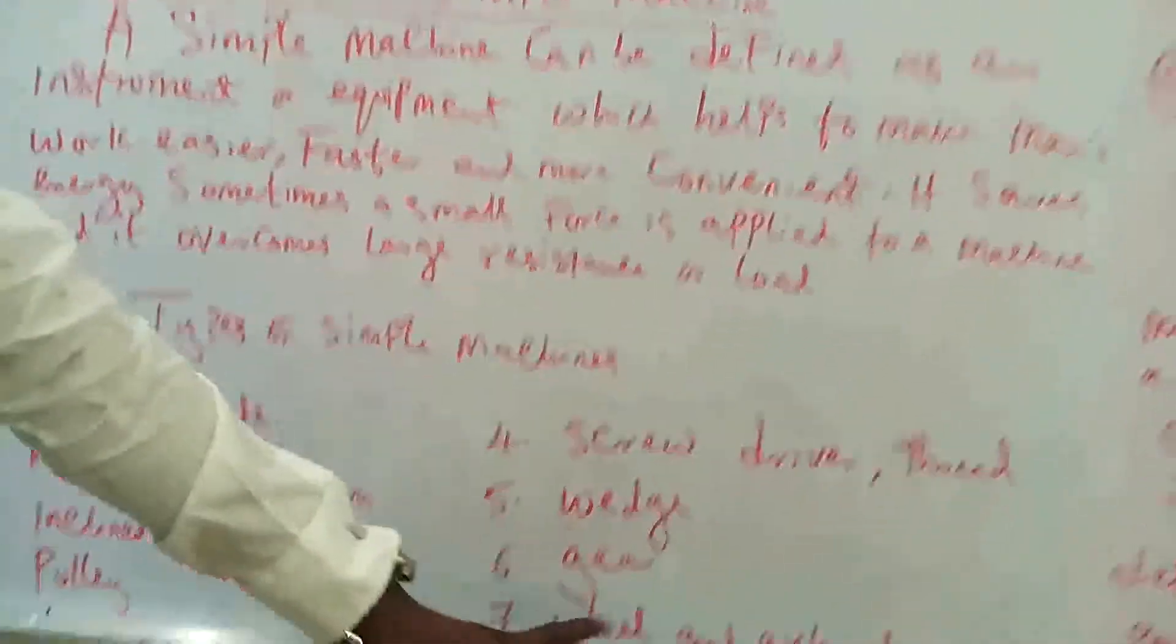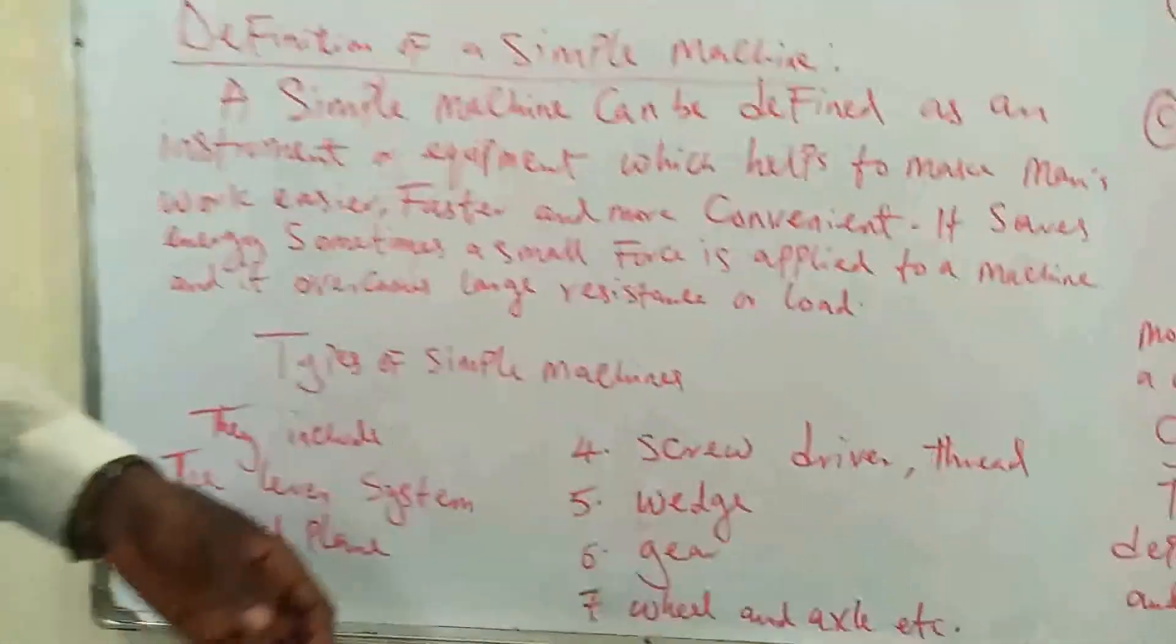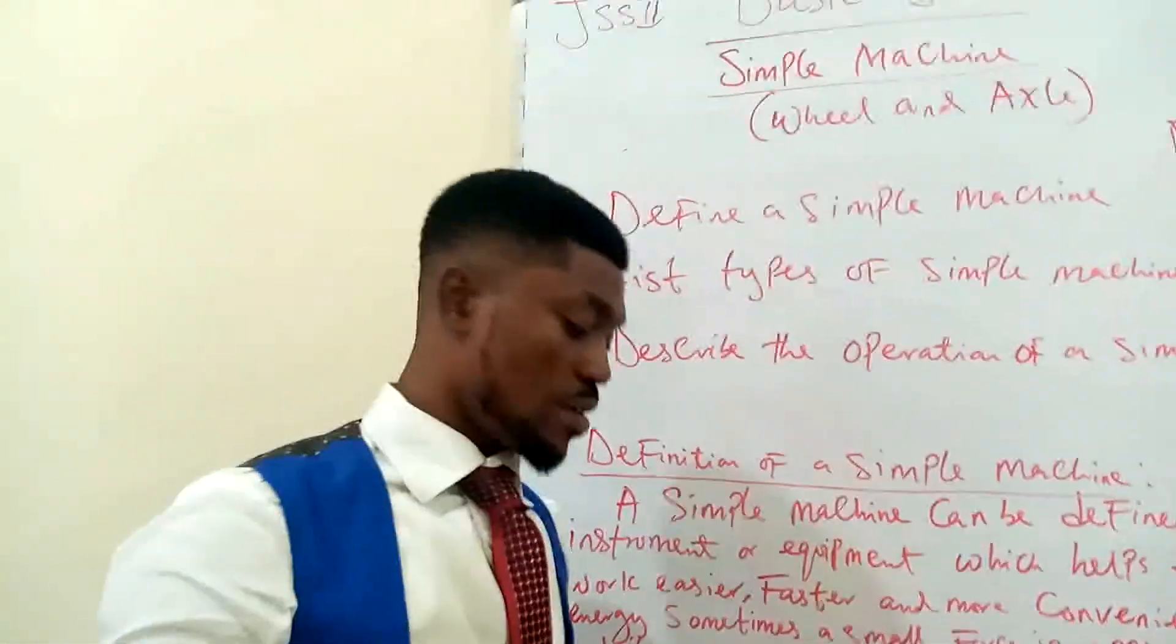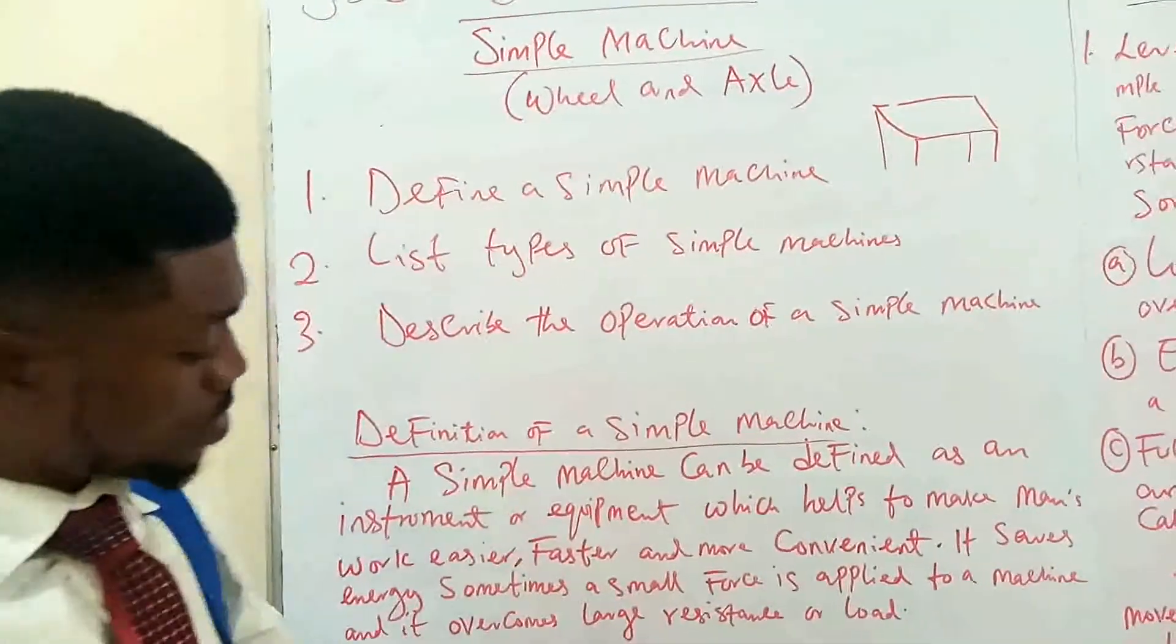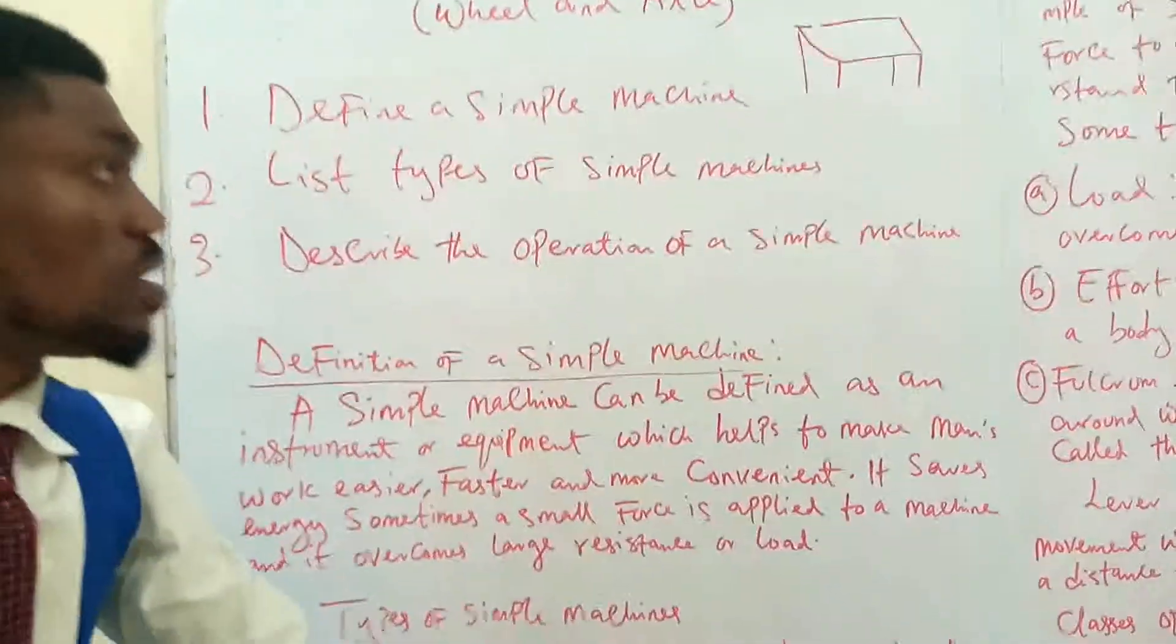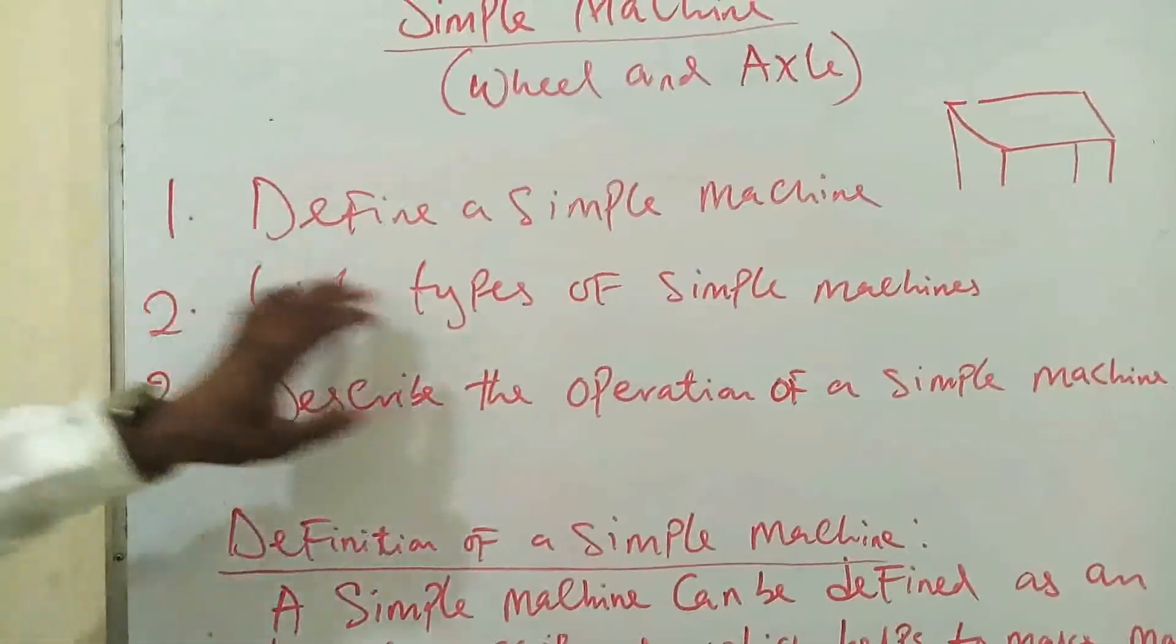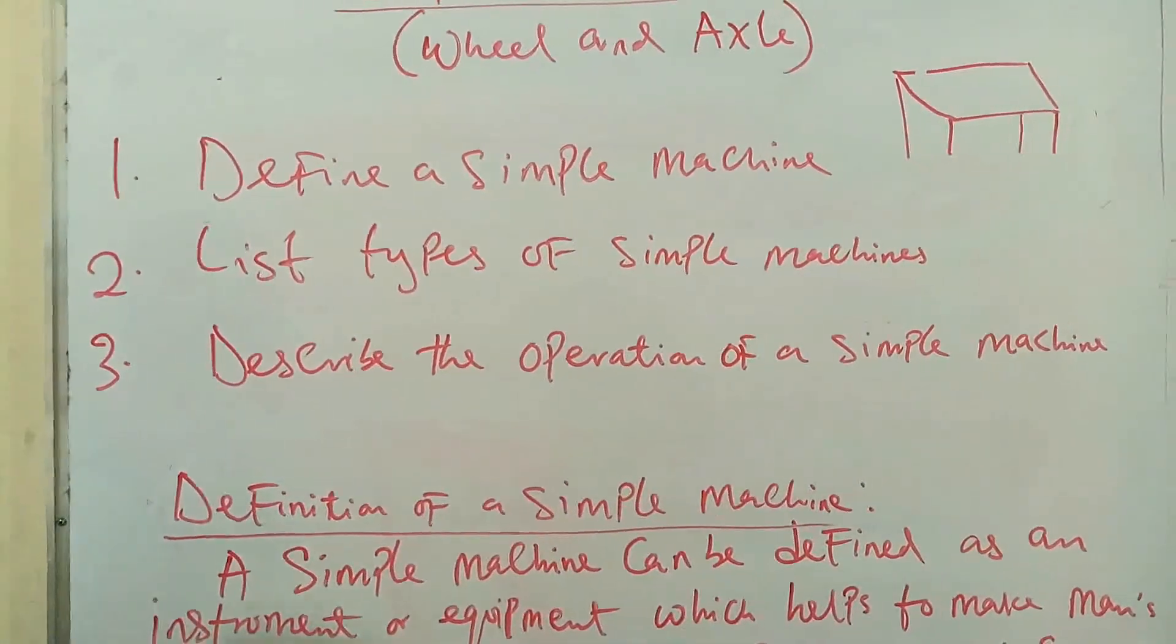We have the gear. You know machines that use gear, don't you? You can name them. We have vehicles, bicycles, motorbikes, etc. And we have wheel and axle. So, back to our objective. After listing the types of simple machines, now we have to describe the operations of these simple machines.